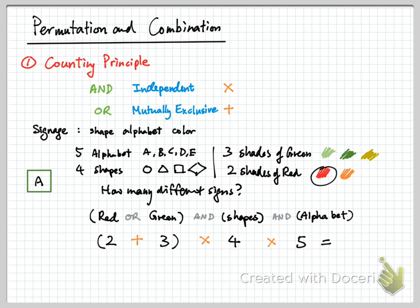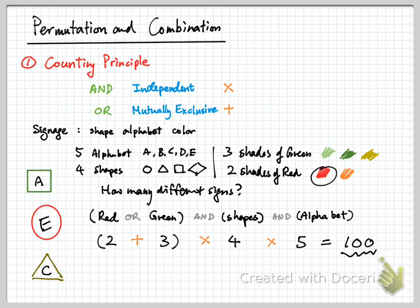All together, the answer is four times five times (two plus three), which equals one hundred. We have one hundred different signs we can make — it could be a red circle with the alphabet E, or a yellowish-green triangle with alphabet C. You have so many ways to make those signs; all together there are one hundred of them. That is how we combine the numbers two, three, four, and five in different ways — sometimes addition, sometimes multiplication — depending on whether the events are mutually exclusive or independent, connected with OR or AND. That is the counting principle. In the next video, we will cover what permutation is.